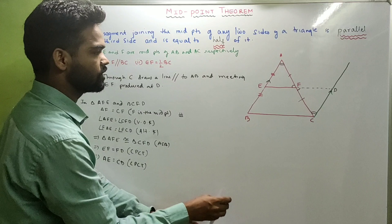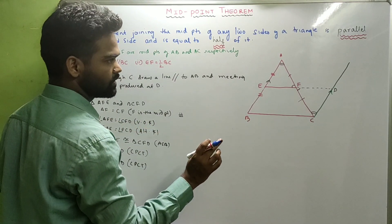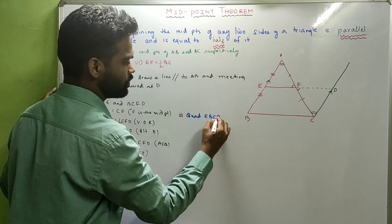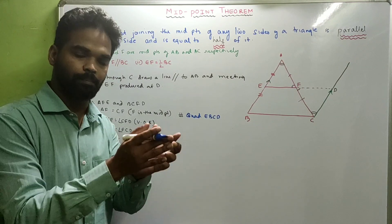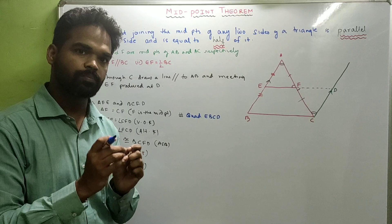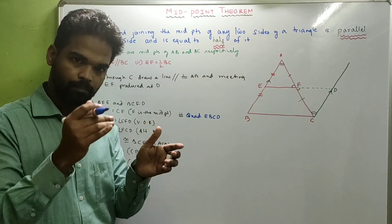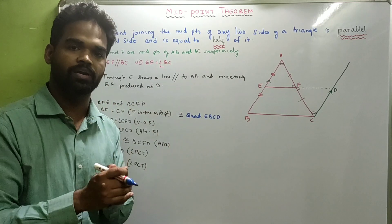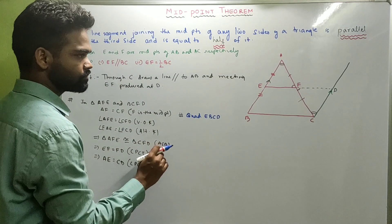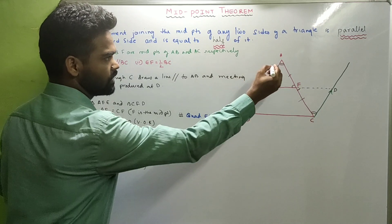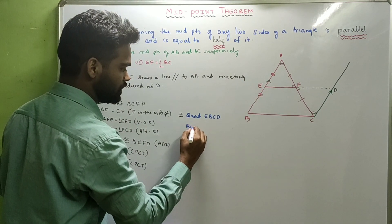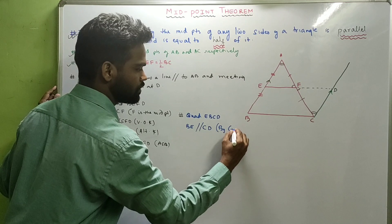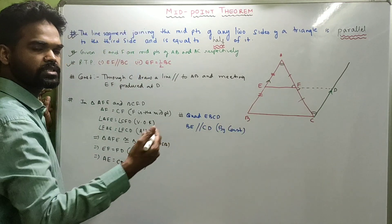Now look at the quadrilateral EBCD. To prove a quadrilateral is a parallelogram, we need to prove that one pair of opposite sides are equal and parallel. In this quadrilateral, BE is parallel to CD by construction. And we can prove that they are equal, making it a parallelogram.